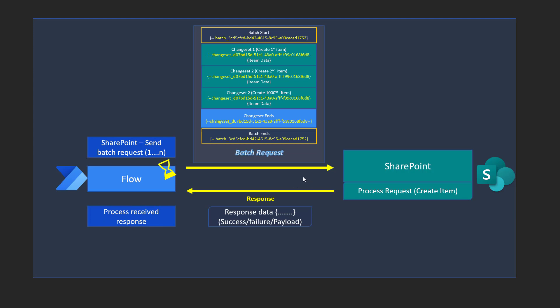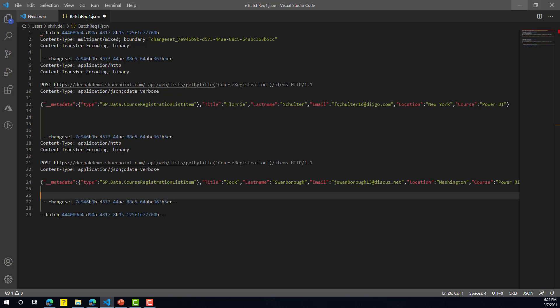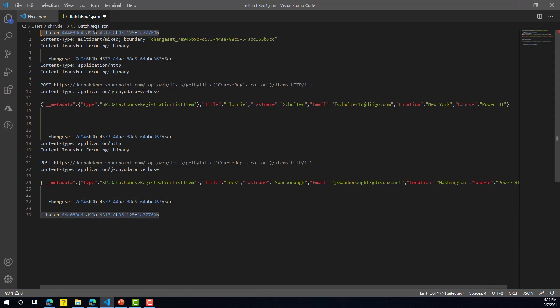Now let me show you how to create a flow that will build a batch request and perform the same operation — creating 1000 list items. Before we start creating the flow, let's understand how the batch request looks.